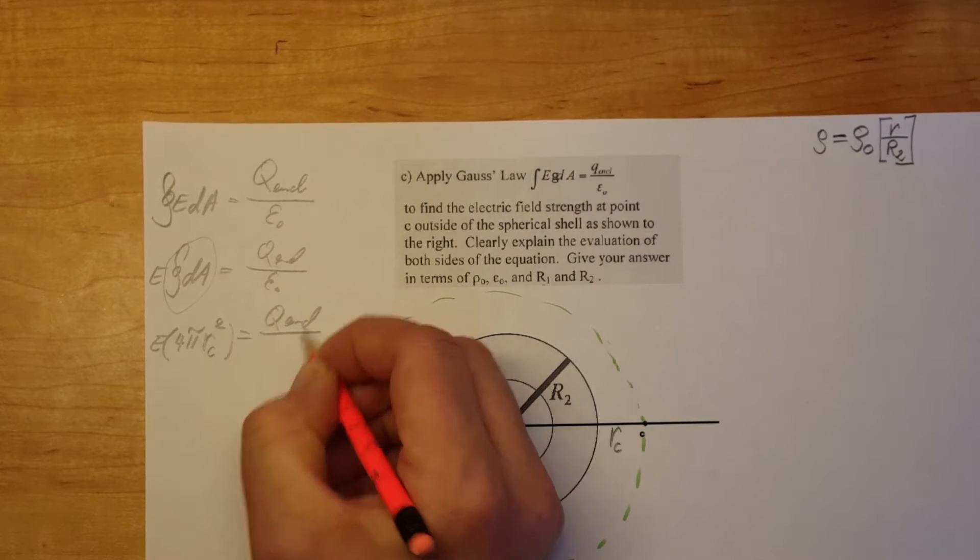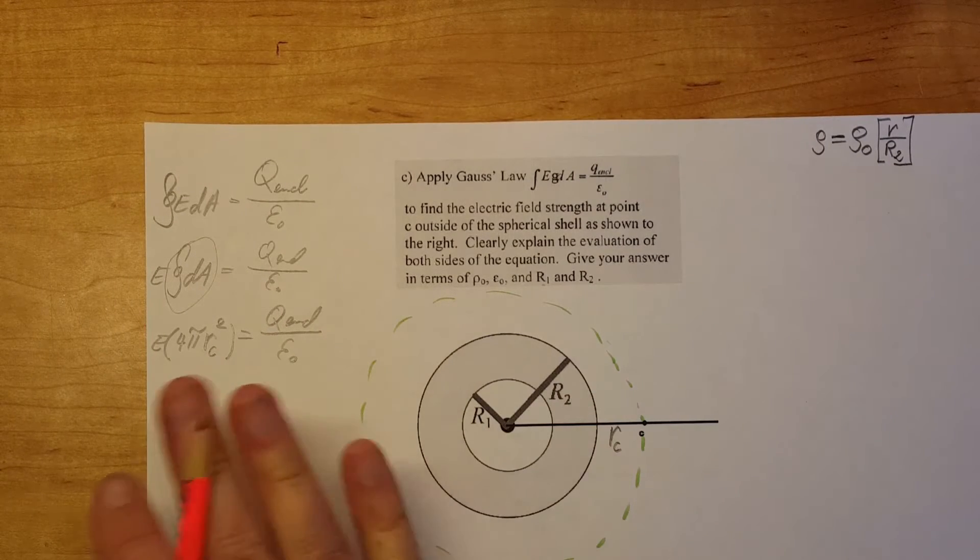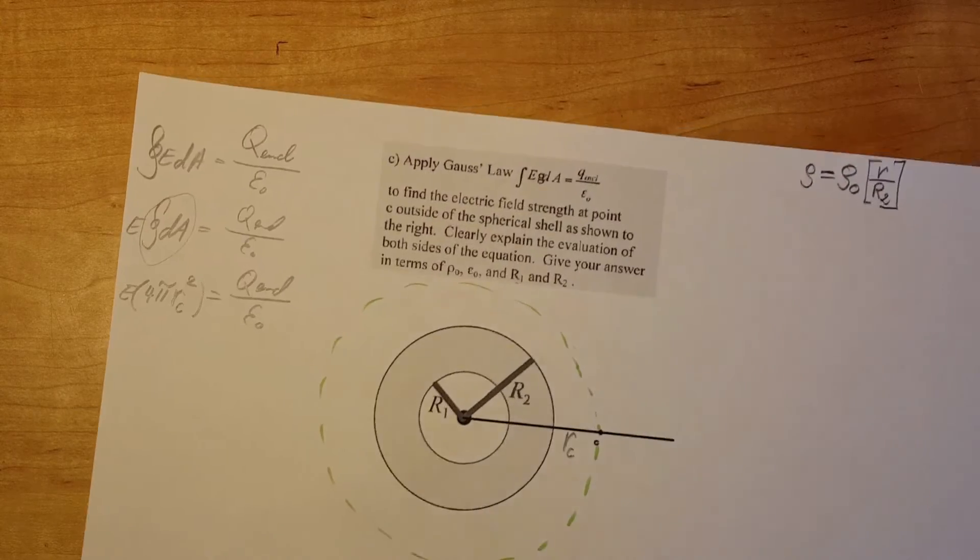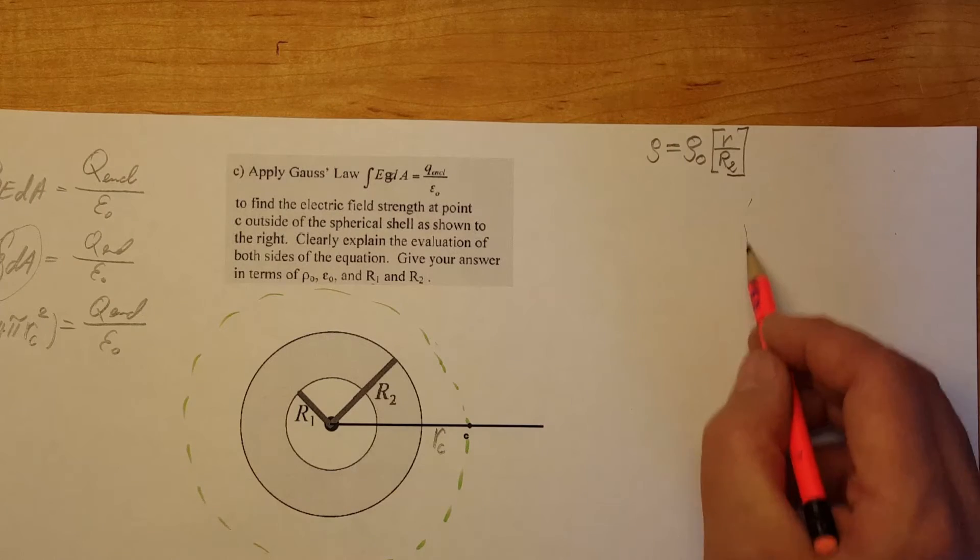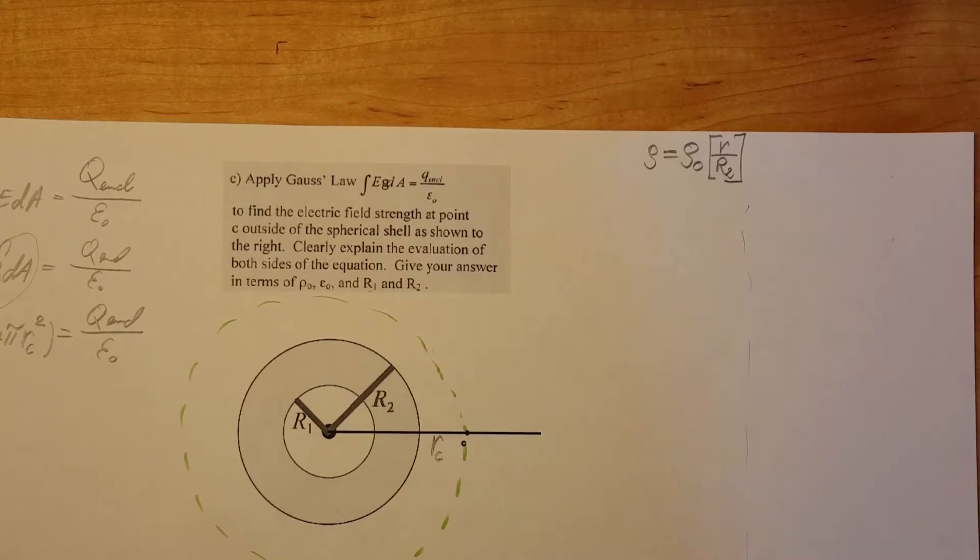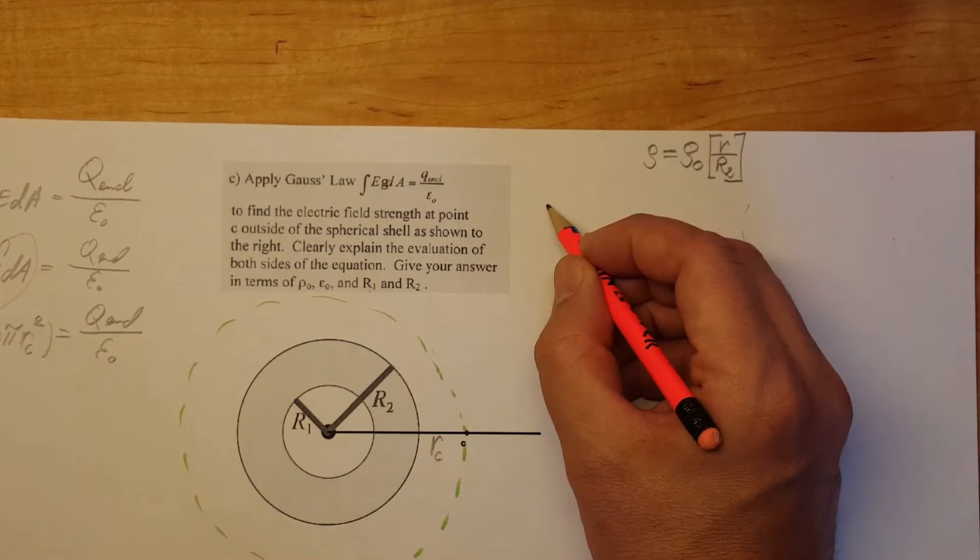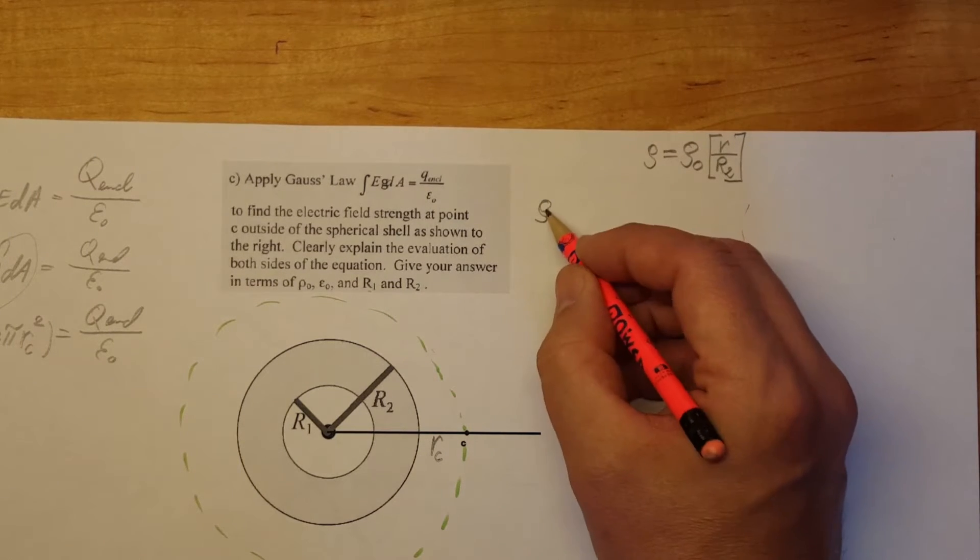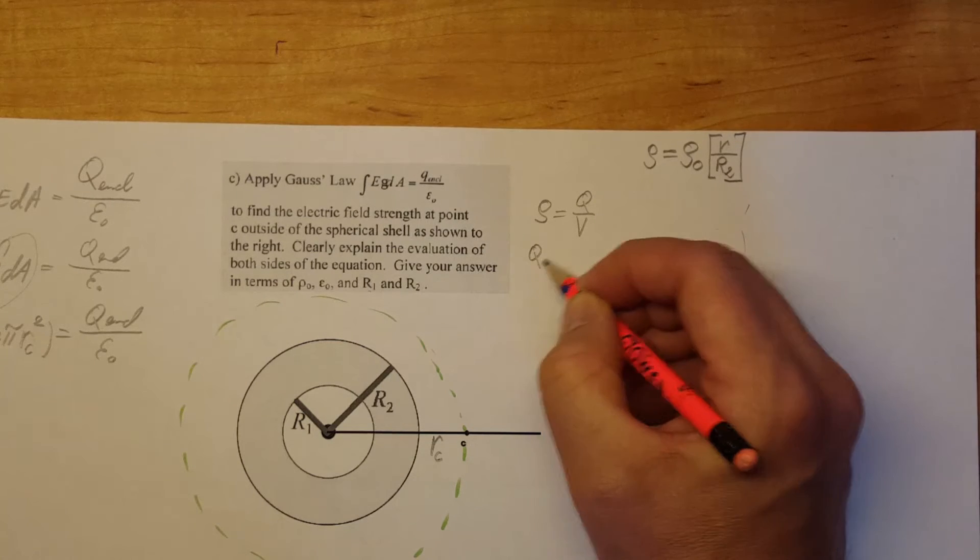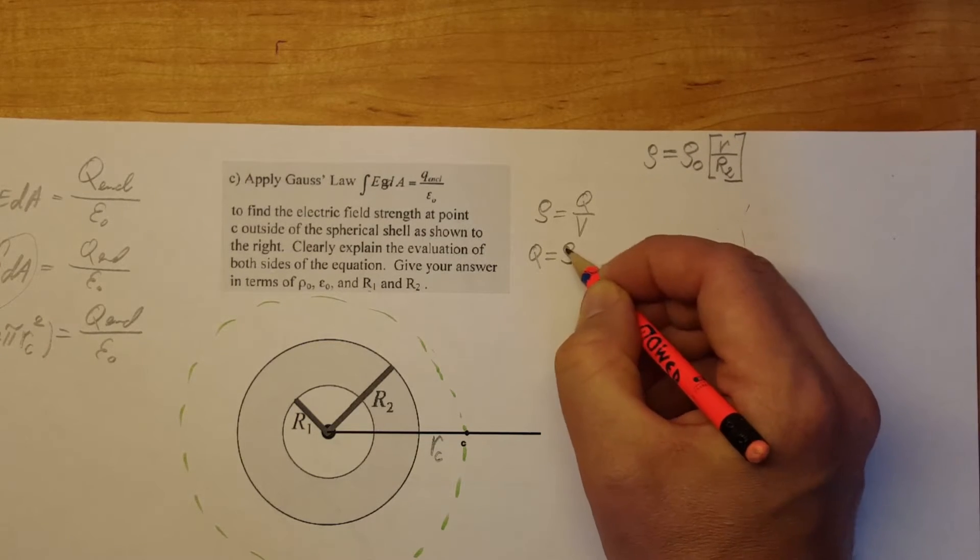Q enclosed over E naught and for now we're going to leave it as is. And we're going to come here and we're going to do our side work. Again, we're going to start with our charge density formula which is Rho equals Q over V. We're going to solve for Q. Rho times V.